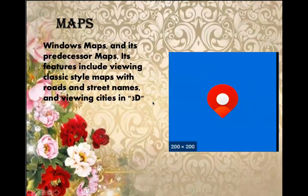Maps — Windows Maps and its predecessor, Maps. Its features include viewing classic style maps with road and street names, and viewing cities in 3D.